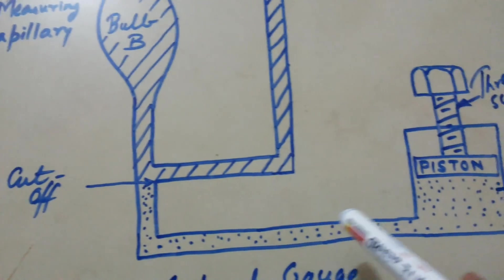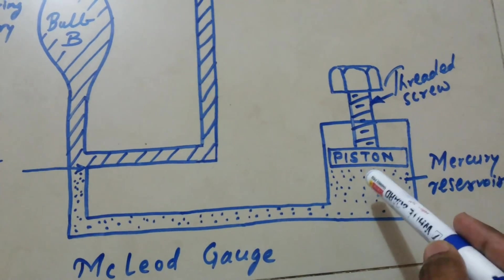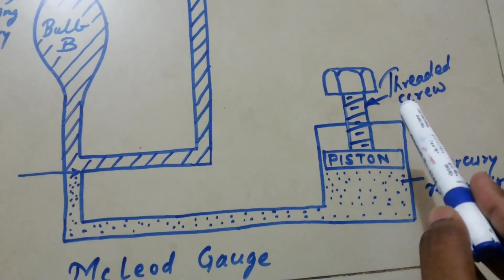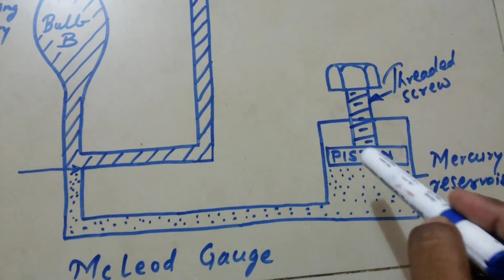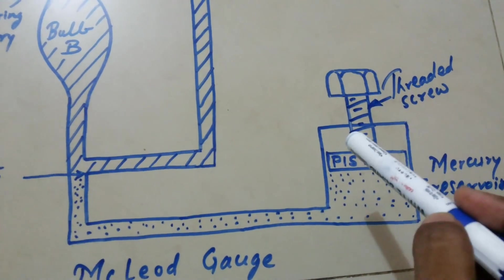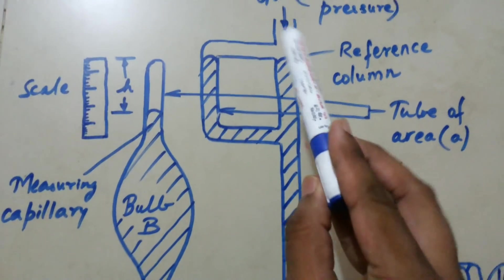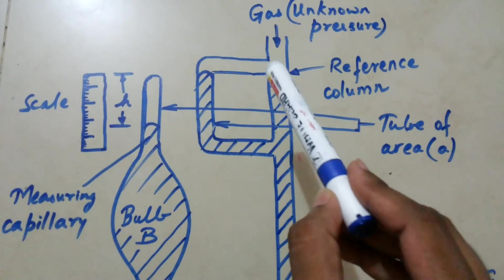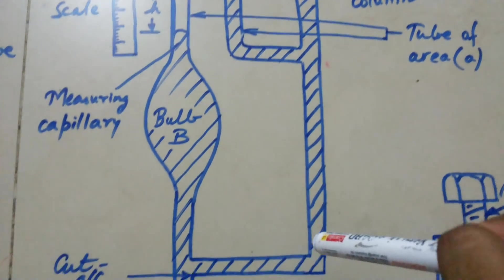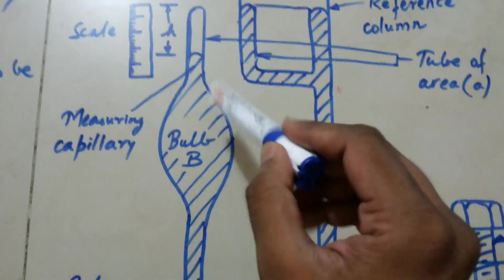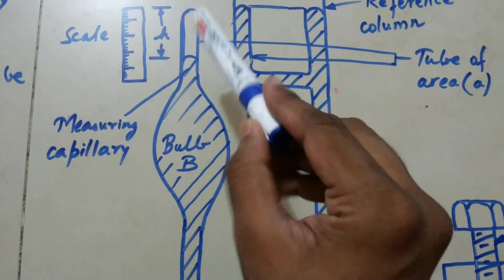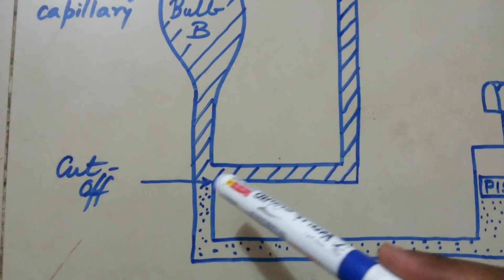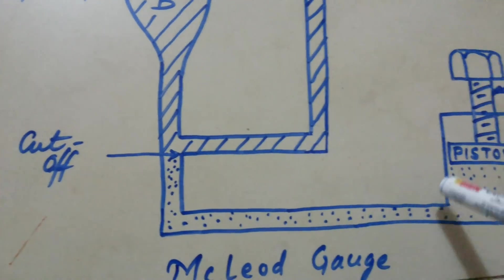Here it is connected to the mercury reservoir, and here is a piston which is connected with a threaded screw so that the piston can be brought down or up. The gas which has the unknown pressure is fed from here and gets trapped in this bulb and this measuring capillary, at the mercury cutoff level.